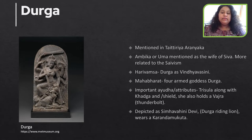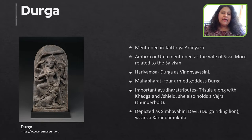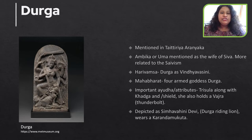Durga is mentioned in the Taittiriya Aranyaka and she is also called Ambika or Uma. She is always referred to as the wife of Shiva, which indicates that the Shakta cult or Shakta Sampradaya was closely related to Shaivism. The Harivamsa mentions Durga as Vidyavasini, meaning one living in the Vindhyas or the Vindhyan Ranges. The Mahabharata mentions Durga as a four-armed goddess. Her important attributes include the Trishula, Khadga, shield, and Vajra. She is often depicted as Simhavahini — riding a lion or sometimes a tiger — and she wears a Karandamukuta, a type of headdress for goddesses.